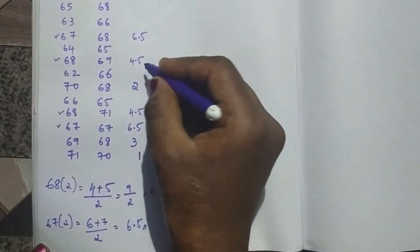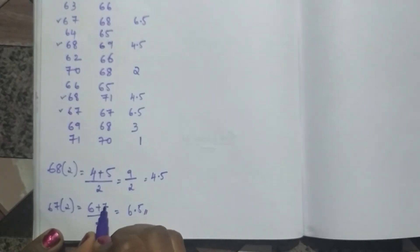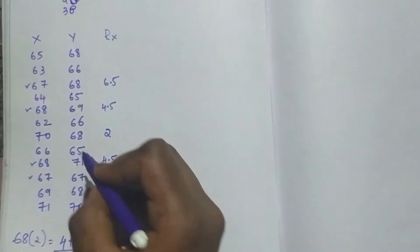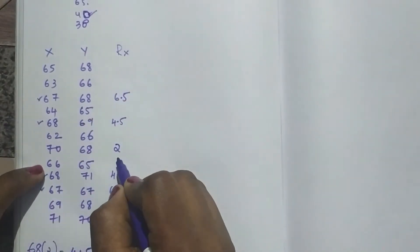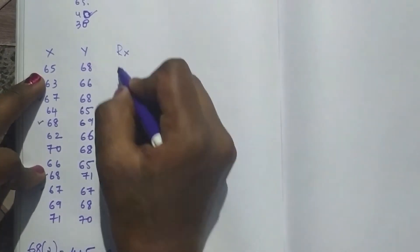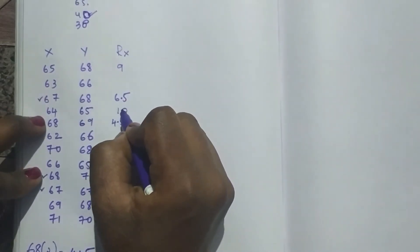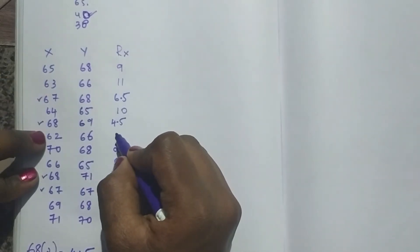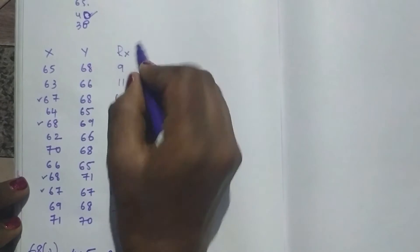After 6.5, till the 7th rank it's done. The next is 8th rank. After 67 comes 66, and I have only one, so I give it 8th rank. Then 65 gets 9th rank, 64 gets 10th rank, 63 gets 11th rank, 62 gets 12th rank. Now ranking for x is complete.